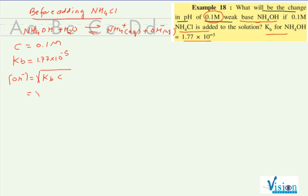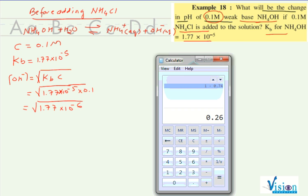So KB is 1.77 into 10 raised to minus 5, C concentration is 0.1. That means that is equal to 1.77 into 10 raised to minus 6. If we take the square root, 1.77, under root 1.3 is 0.41, that means 1.33 into 10 raised to minus 3.